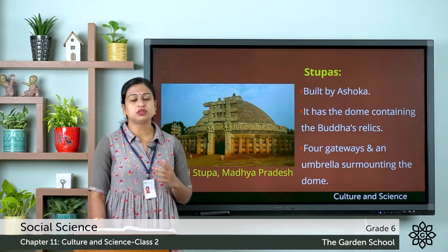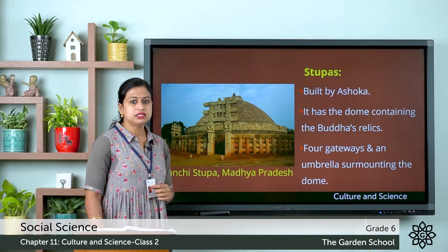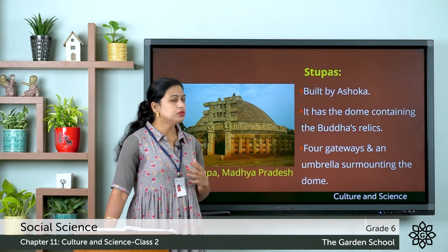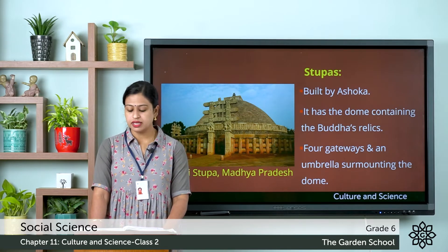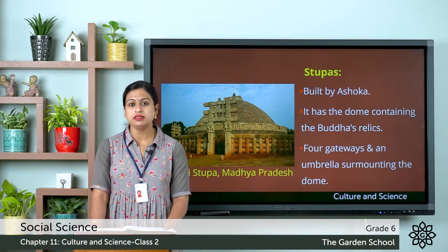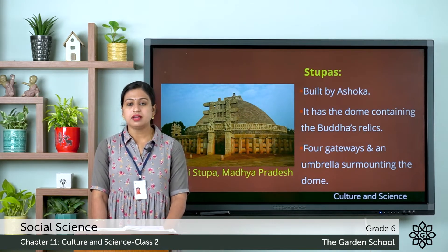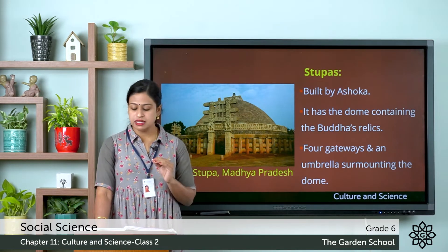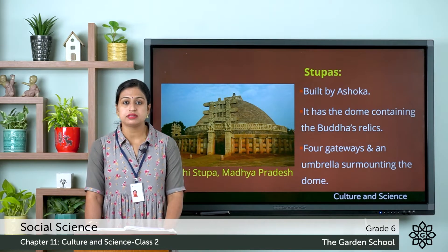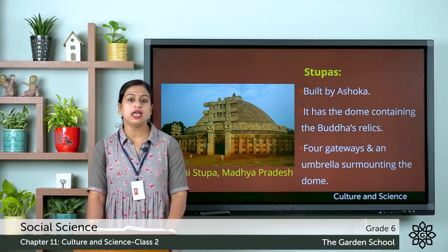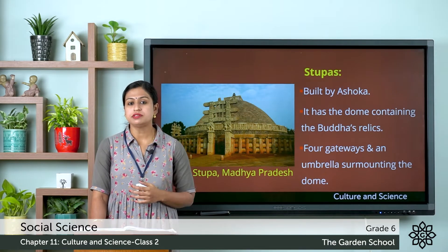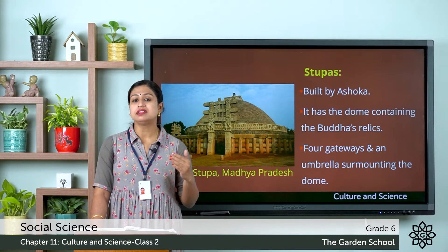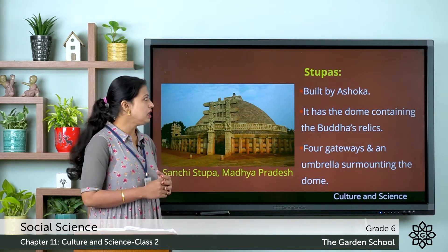The most famous stupa is the Sanchi stupa, which is located in Madhya Pradesh. This stupa was built by Ashoka and has a dome containing the Buddha's relics. It also contains four gateways and an umbrella surmounting the dome. You can also see many railings — that is, fences or barriers made up of rails — with four decorated gateways in the directions of east, west, north and south. There are also many beautiful panels and pillars having sculpted scenes mainly from the life of Buddha and from the Jataka tales.